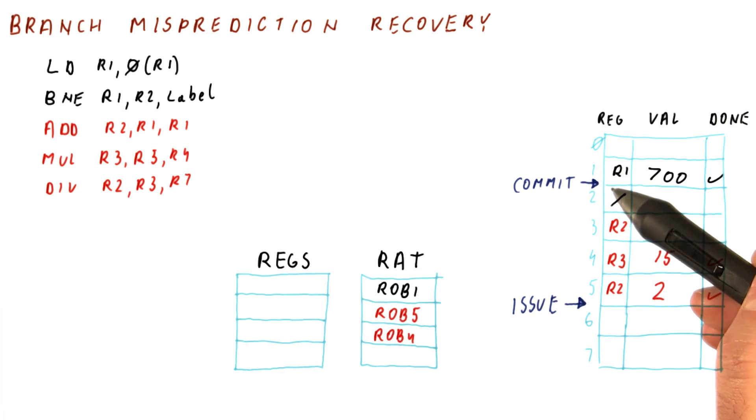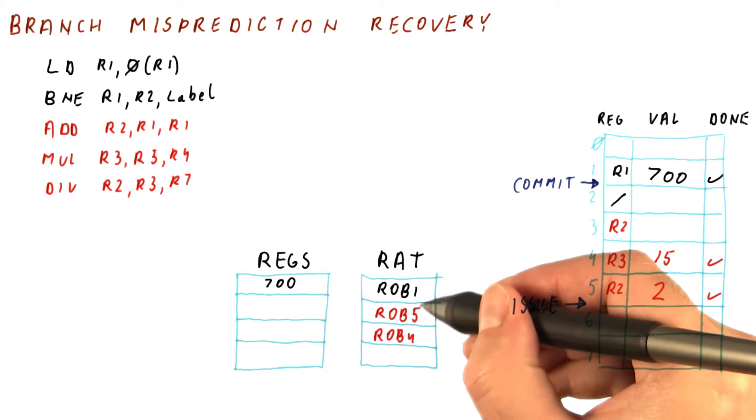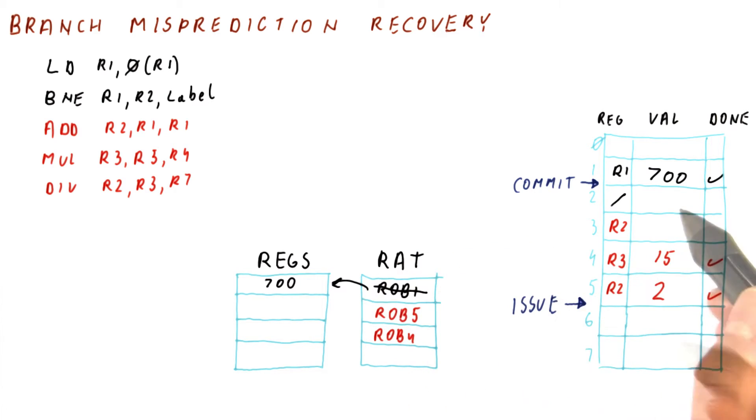which will result in moving the commit pointer here and writing this value of 700 to register R1, and also making the RAT now point here.